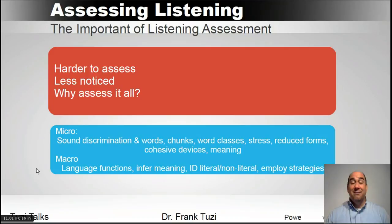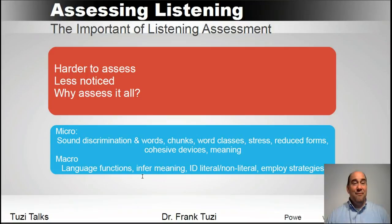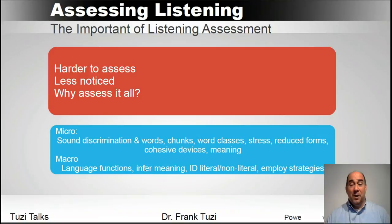You can look at the macro elements as well — the language functions, the purpose of a particular monologue or dialogue. Inferring meaning: you hear something, but what does it actually mean? What are they saying that they're not really saying? You can identify the literal or non-literal components in language — are they telling a joke or are they being serious? That may also include things you see. And then there are strategies they might be employing as they're speaking and things listeners have to pick up.